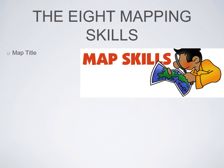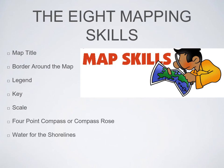First is the title, so the name of the map. Second, a border around the map, like a picture frame. Third is the legend, which outlines what each object, color, and symbol is on the map. The key, which explains it. Scale, a compass, water to indicate the shorelines, neatness, and then accuracy. These are the eight main mapping skills when it comes to mapping.